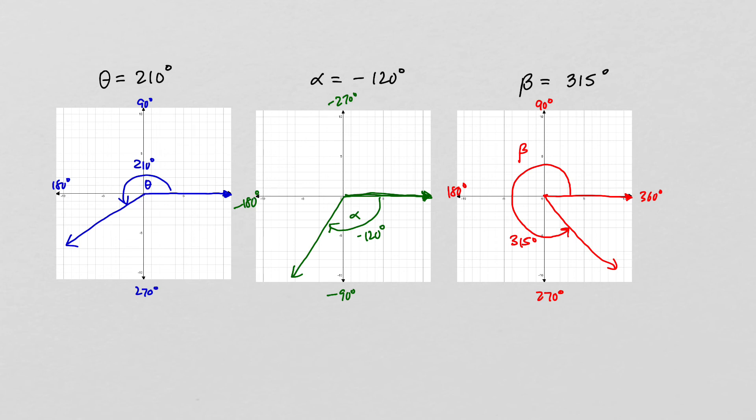When graphing these angles, we're not trying to be precise — we just want to locate the angle in the correct quadrant and confirm we're rotating in the correct direction.